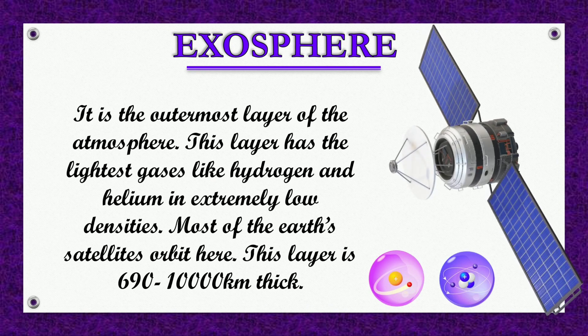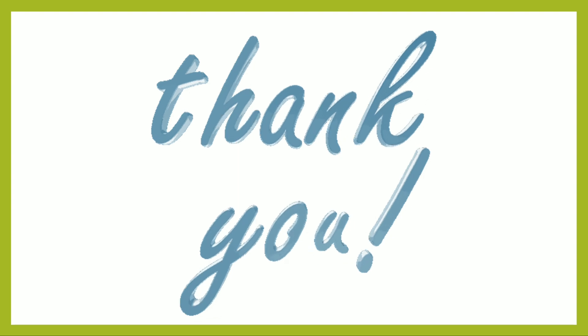Exosphere: It is the outer layer of the atmosphere. This layer has the lightest gases, hydrogen and helium, in extremely low density. Most of the Earth's satellites orbit here. This layer is 690 to 10,000 kilometers thick.